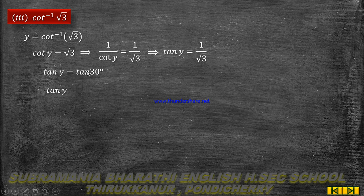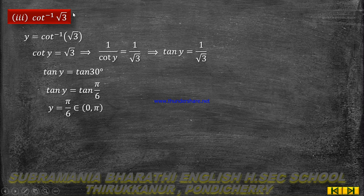So tan y equal to tan 30 degrees, converting to radians: tan y equal to tan(π/6). This implies y equal to π by 6, which belongs to the range (0, π) — the valid range for cot inverse.